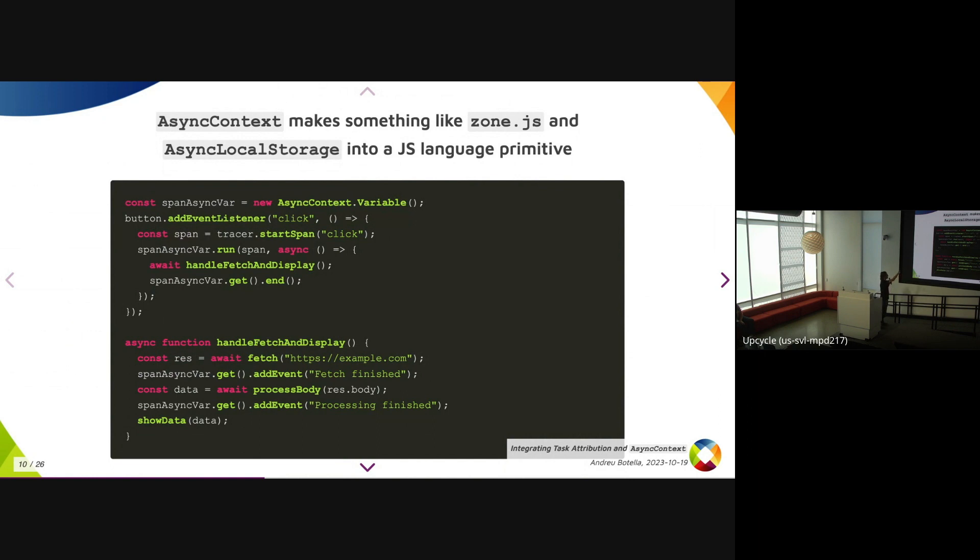And here rather than setting the span async variable, we call the async function inside spanAsync.run, which sets the span on the function and anything that spans from that, whether it's actual async continuations with await or even setTimeout as we'll see later. So in order to get that, you do spanAsync.var.get, which gets the current value, the one associated to the current async flow of control. And then that is the span and you can call addEvent and whatever.